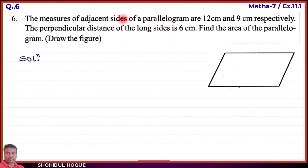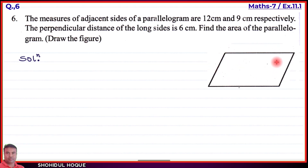Question number 6: The measure of adjacent sides of a parallelogram are 12 cm and 9 cm respectively. The perpendicular distance of the long side is 6 cm. Find the area of the parallelogram and draw the figure. So we need to draw the figure first and then find the area.